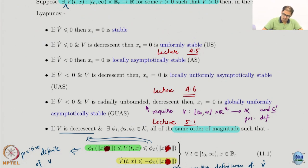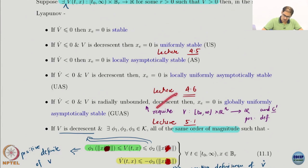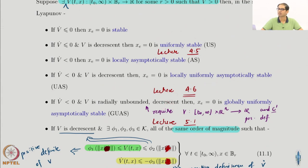We defined uniform asymptotic stability locally and globally, but we did not talk about global asymptotic stability. If I just drop the decrescence condition, I will immediately get global asymptotic stability, which is not necessarily uniform.